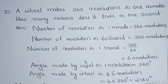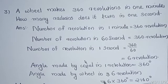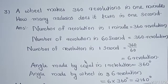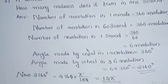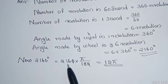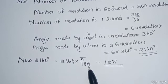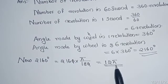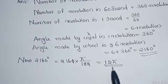A wheel is round in shape, so the angle made by the wheel in 1 revolution is 360 degrees. The angle made in 6 revolutions is 6 into 360, which equals 2,160 degrees. We want to express that angle in radians, so we calculate 2,160 multiplied by π/180, which gives us 12π. So the radians it turns in 1 second is equal to 12π.